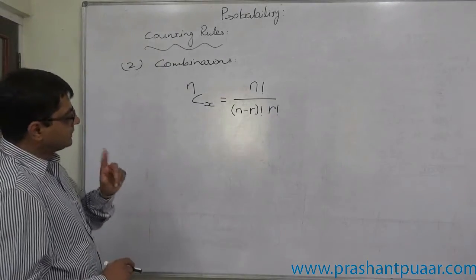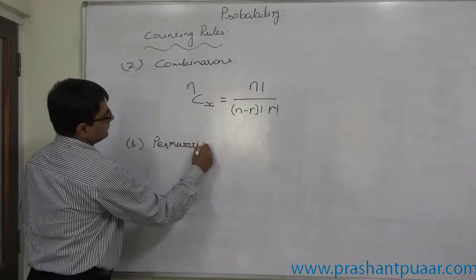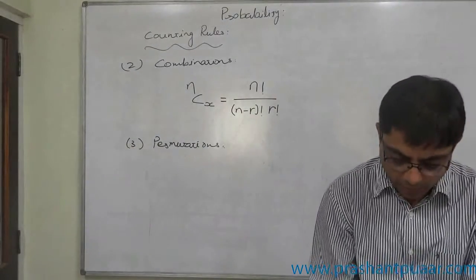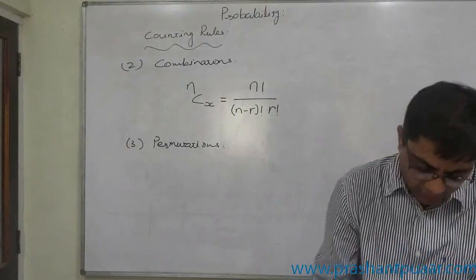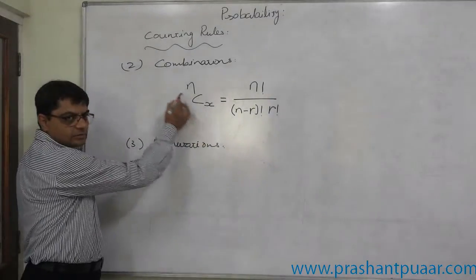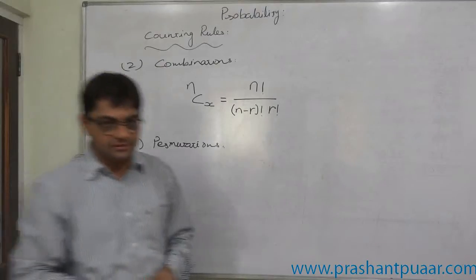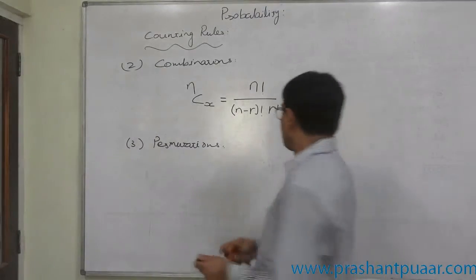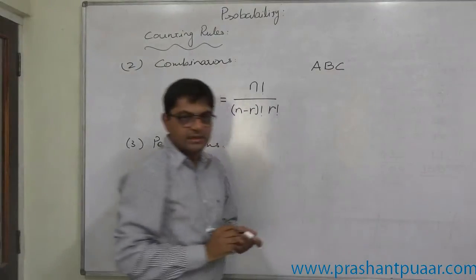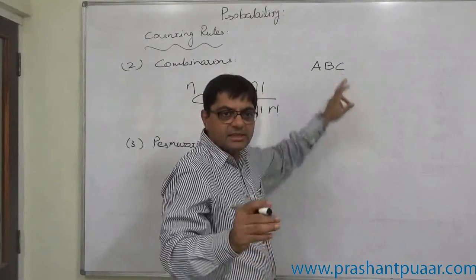The third rule is permutations. The rule of permutations is useful in the case of selection of x items out of a total collection of n items or outcomes, but where the order is important. For example, if a, b, c is the collection of three outcomes — a comes, b comes, and c comes — that is one arrangement.